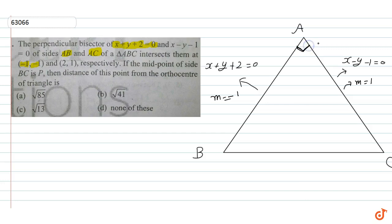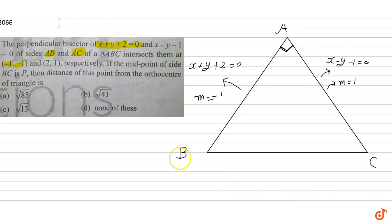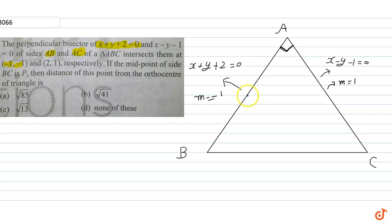Now, since the perpendicular bisector always passes through the midpoint, the given point (-1,-1) is the midpoint of AB, and the given point (2,1) is the midpoint of AC.